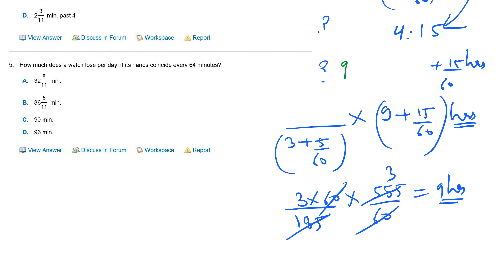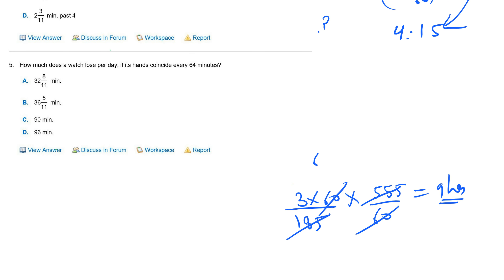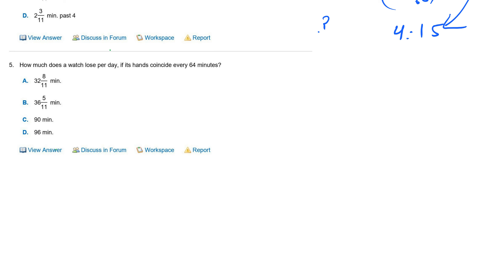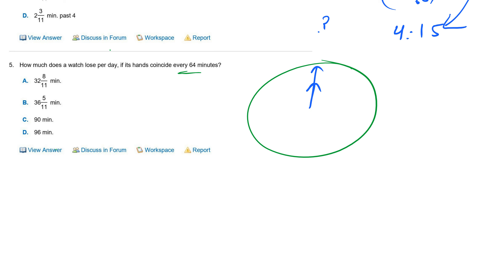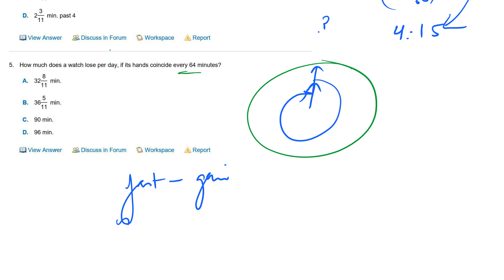Now this question: if the hands coincide every 64 minutes — now this is my clock. This clock's minute hand is running fast. So our minute hand will meet the hour hand sooner. Now, when a clock is running fast, time is gained; when a clock is running slow, time is lost. I know this.